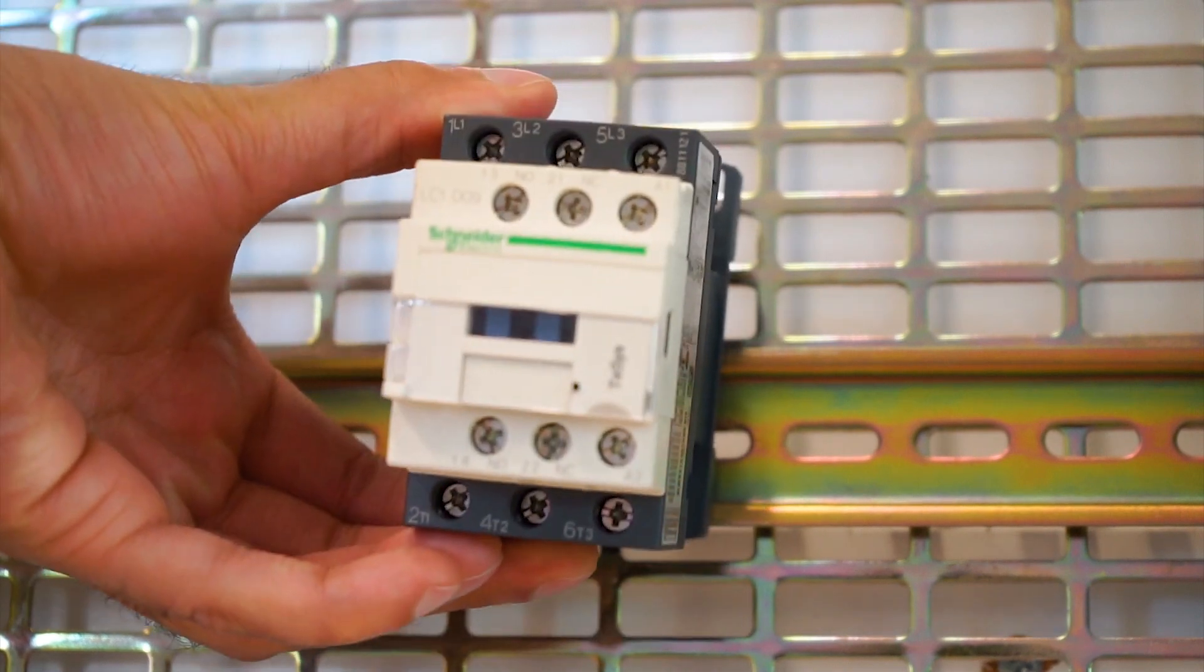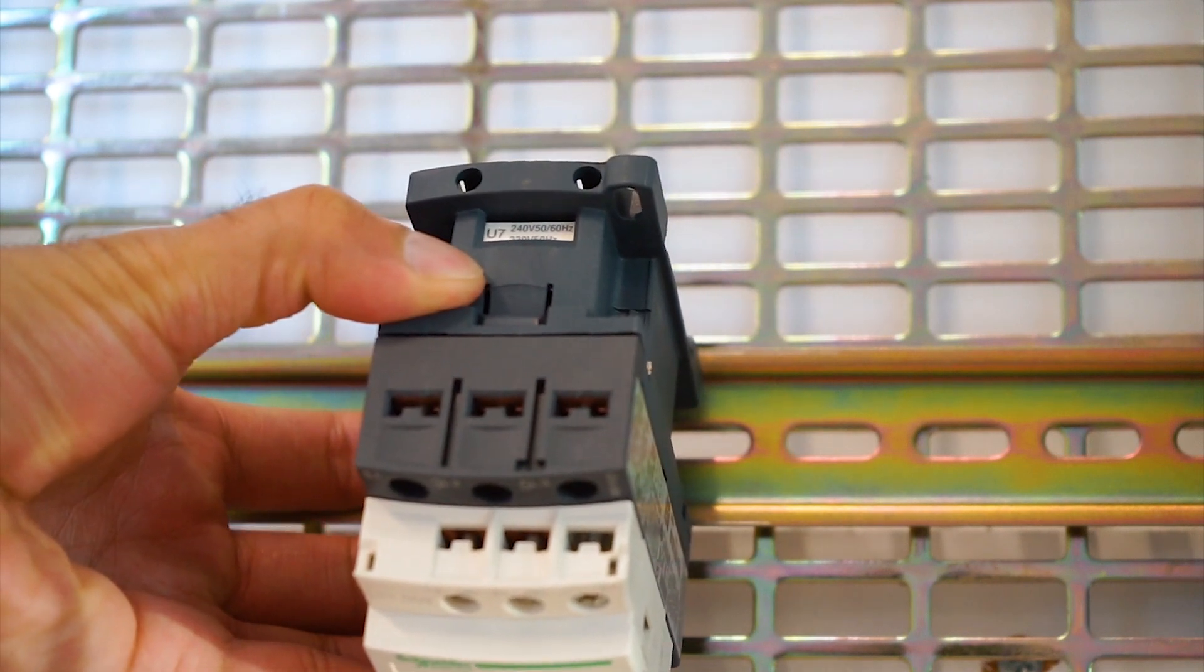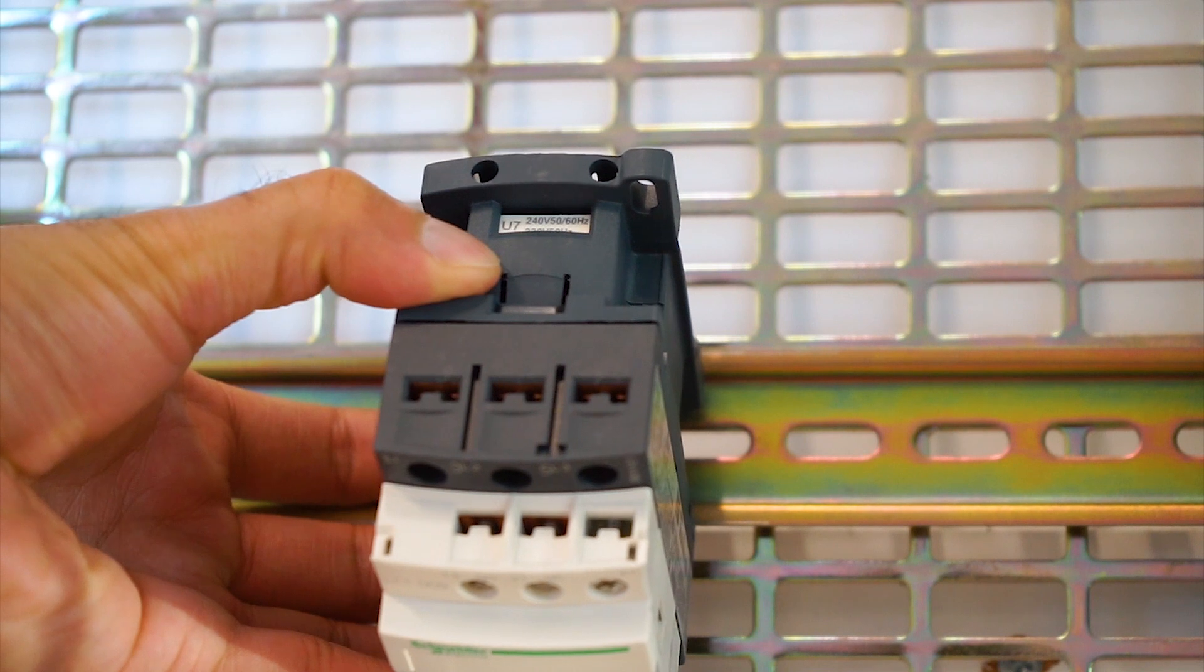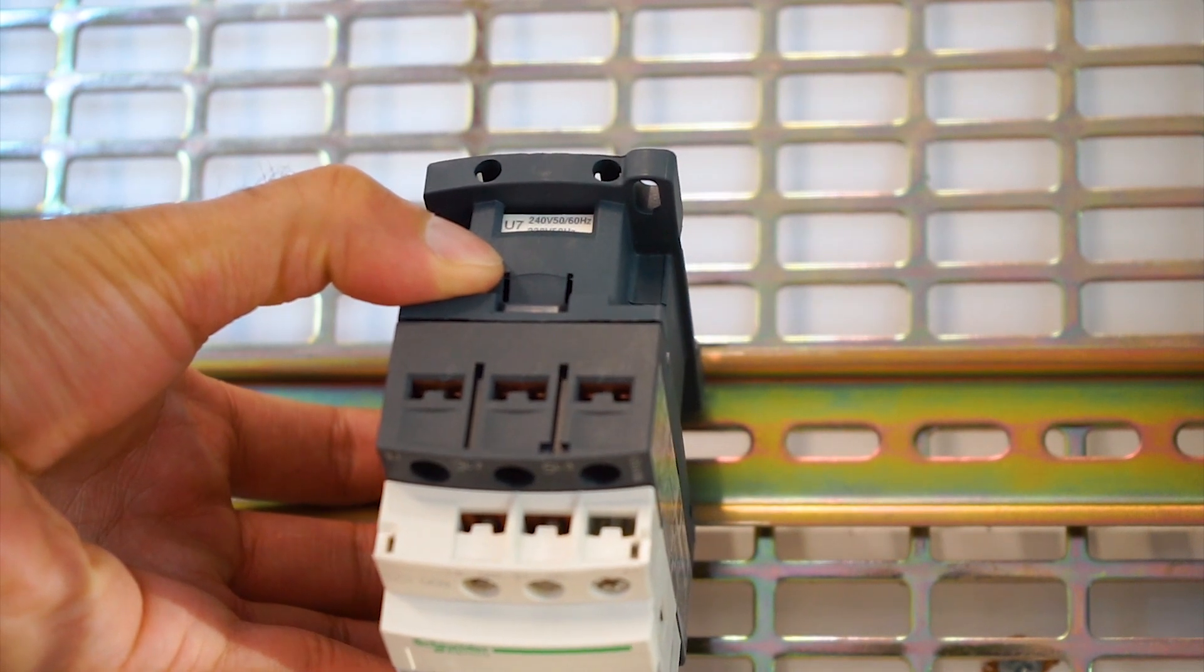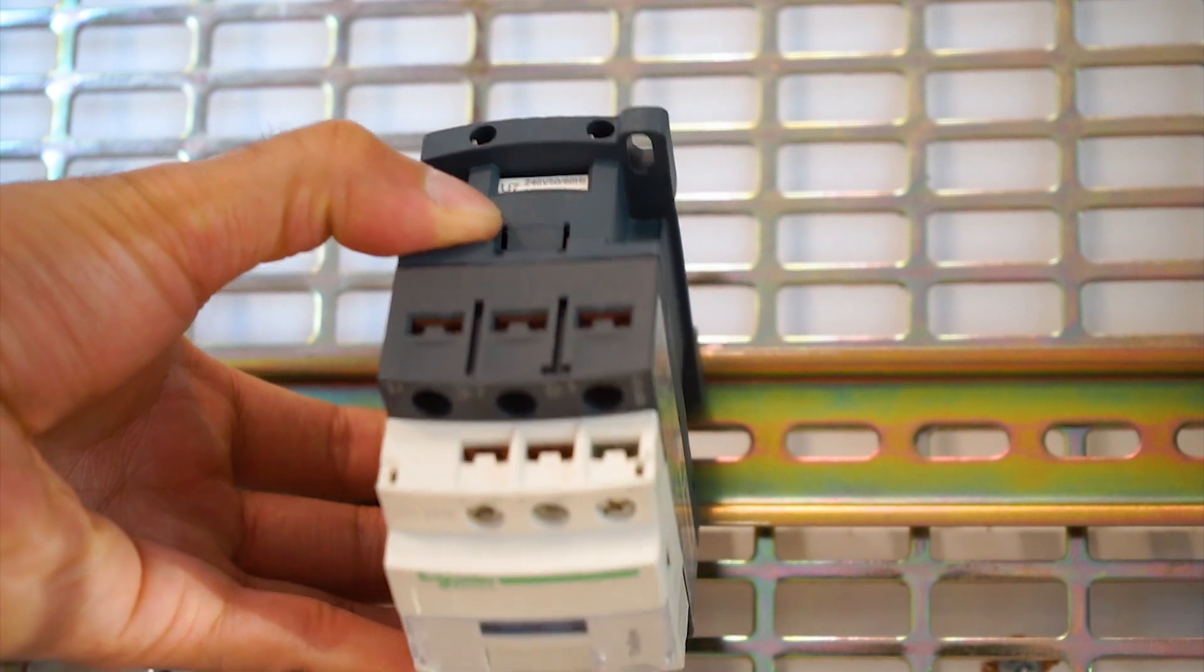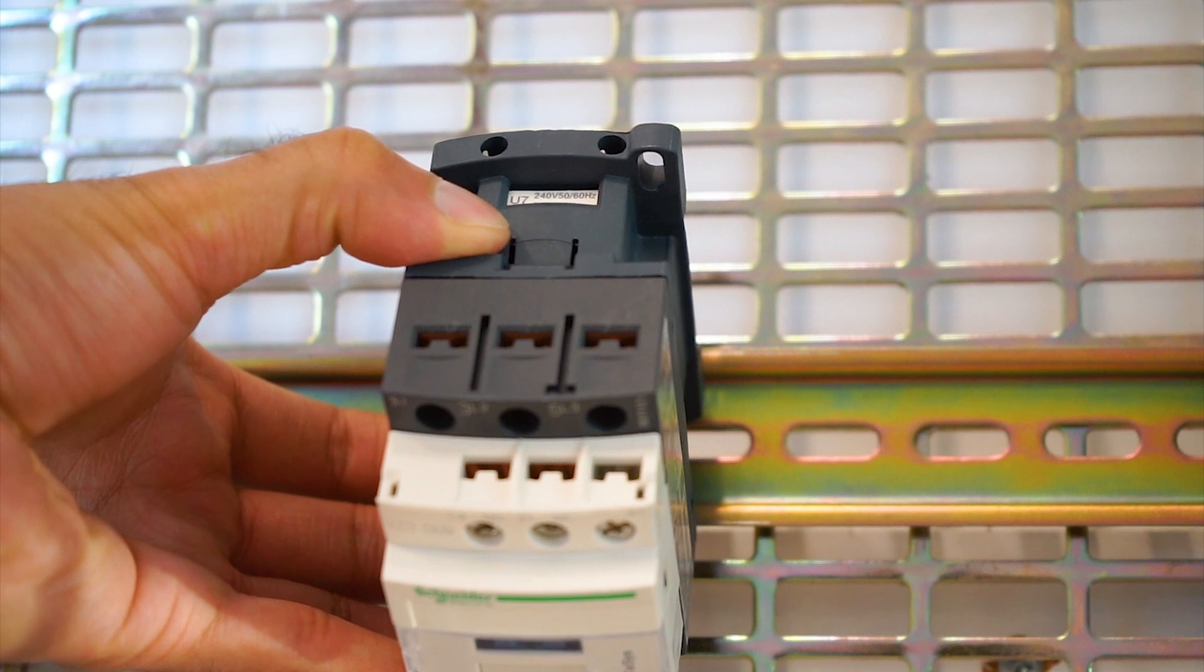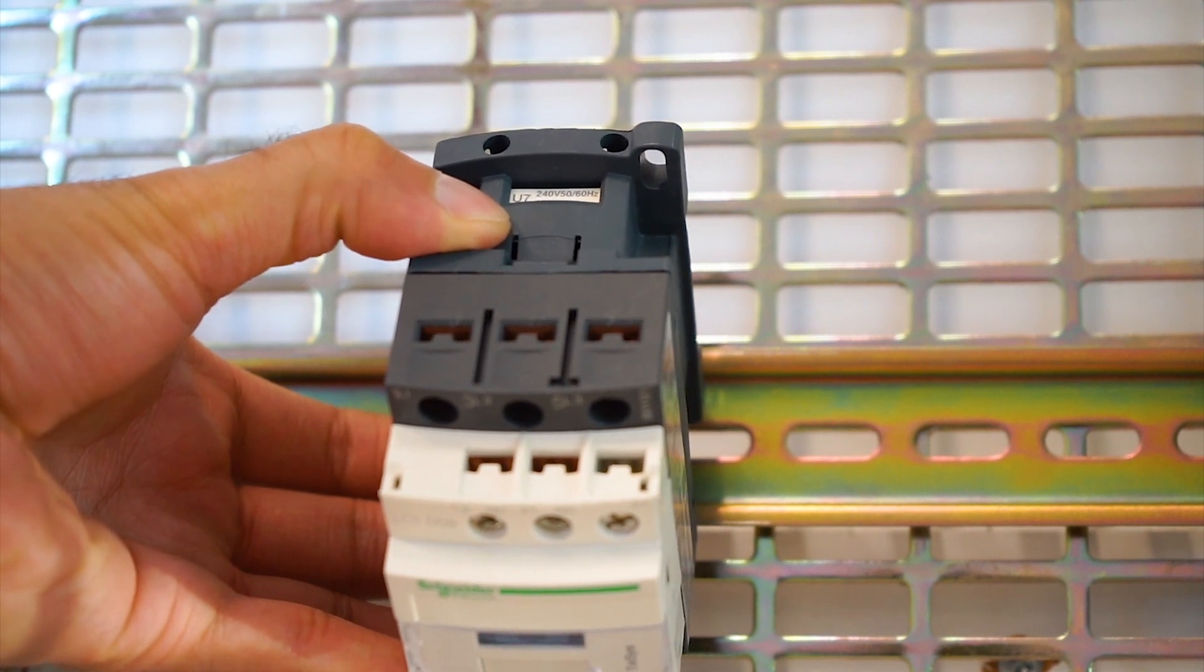You can find the coil voltage marked U7. U7 is the code for 240 volt AC coil at 50 or 60 Hertz. So that's your coil voltage for the 3-pole AC contactor. Usually you find it at the top back end.